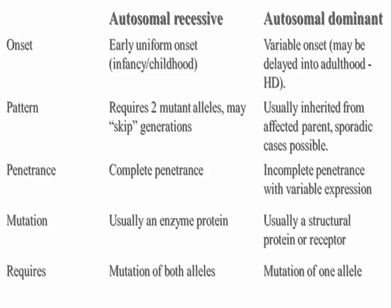Autosomal dominant disorders are caused by mutation of a single gene pair on a chromosome when a dominant allele prevails over the normal allele. An adult form of polycystic kidney disease is an autosomal dominant disorder and is frequently asymptomatic until the patient is older. Pre-symptomatic testing can give a patient information useful in guiding lifestyle and childbearing choices, especially if they have an autosomal dominant risk.